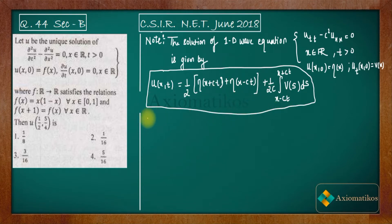So according to this, u of x,t will be 1/2 of, so what is this? This is u(x,0). So what is u(x,0) in your problem? It is f. So f of x plus, now what is c? c is 1, x plus t plus f of x minus t plus 1 by 2c. So what is c? c is 1 so just write it 1.